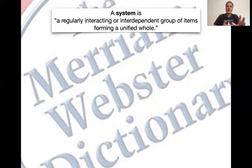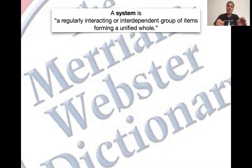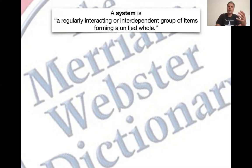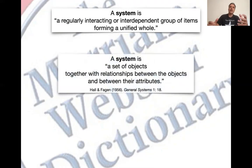There's already something really interesting here. So a group of items: they are interdependent, they interact, so it's dynamic, and they form a unified whole. We have to think a lot about what that means. When is a system a whole, and what is that? This is very concise, very short, very precise, but not very useful. So let's expand it a little bit.